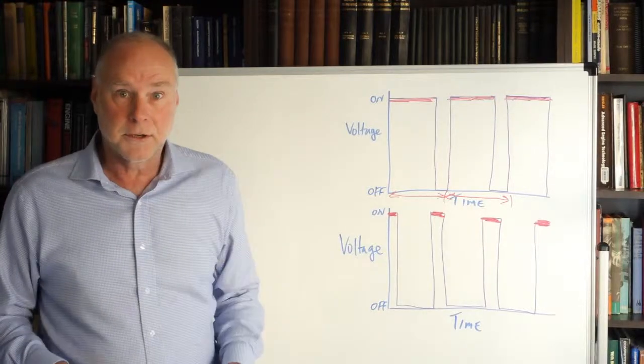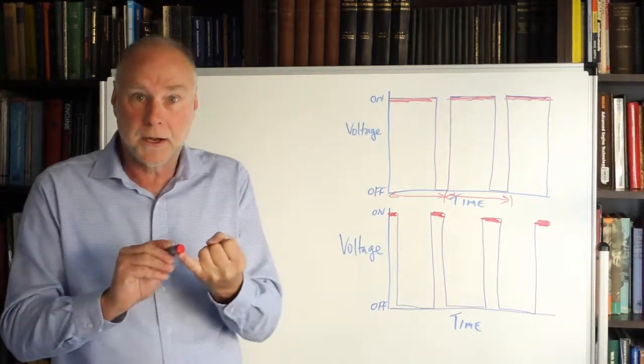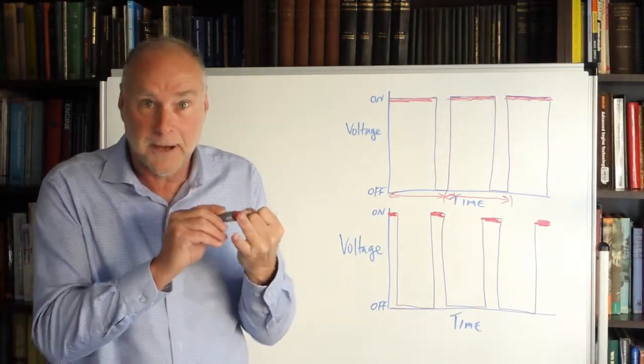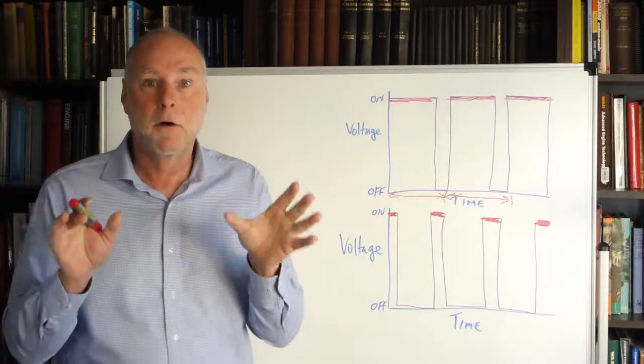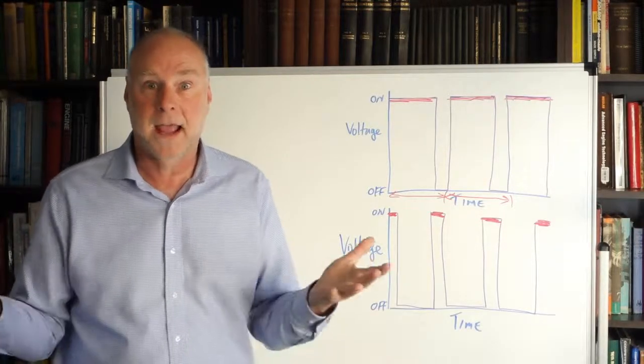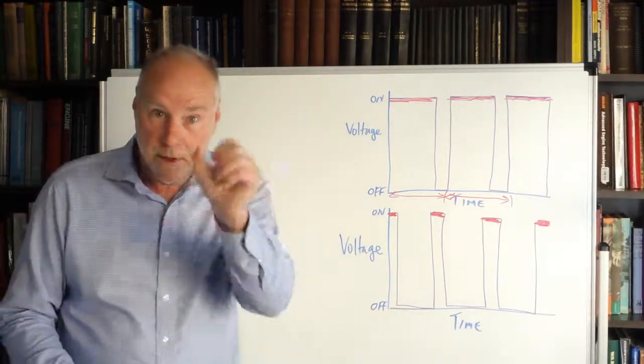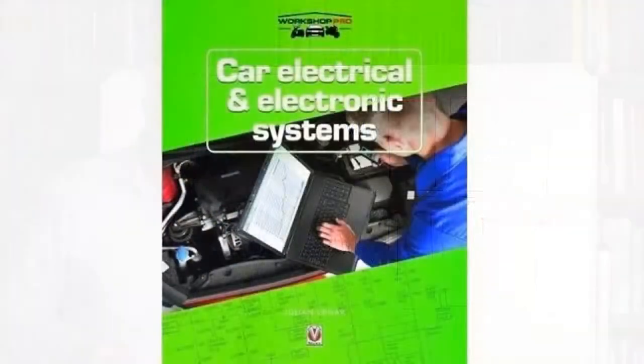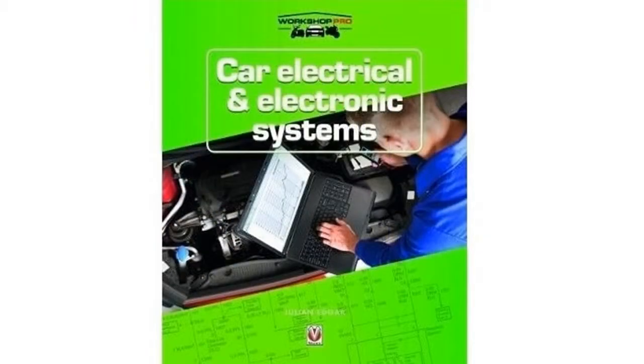Pulse width modulation control, variable duty cycle, and usually at a fixed frequency, stepless control of items like pumps, fans, and lights. It's all in the book, Car Electrical and Electronic Systems, and I recommend that book to you.